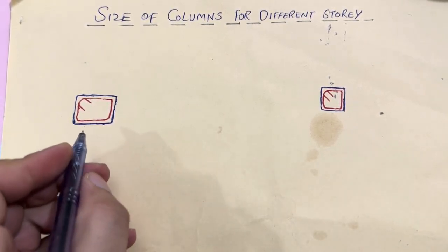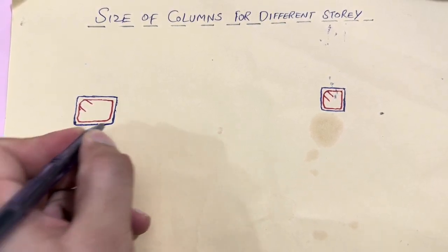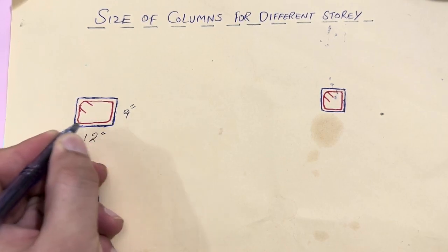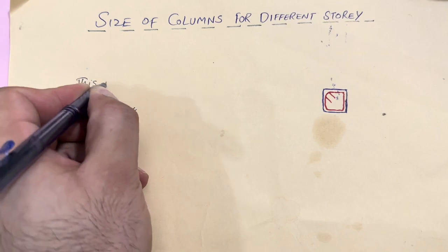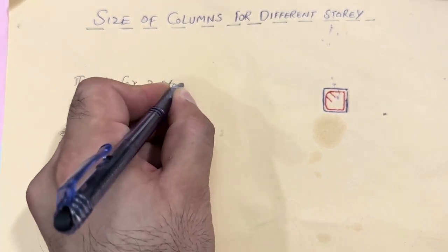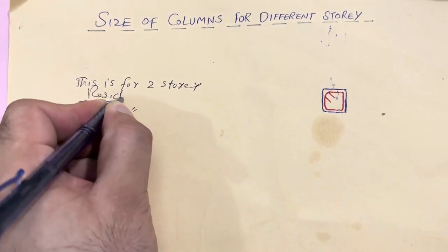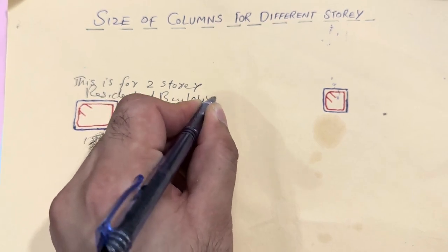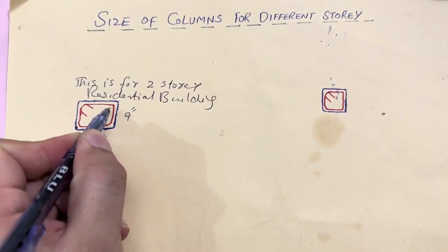Remember, if we keep the size of the column for a normal residential building which is 9 inches by 12 inches — this is the size of the column — this is for a two storey residential building. We require six numbers of steel rods.